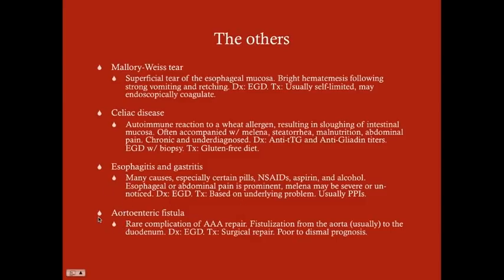The aortoenteric fistula is a rare complication of abdominal aortic aneurysm repair — fistulization from the aorta, usually to the duodenum. Diagnosis is best made with EGD, though CT can also be used. Treatment is surgical repair. This carries a very bad prognosis with a mortality rate around 50–70% or higher.